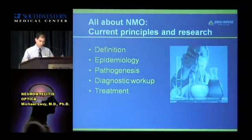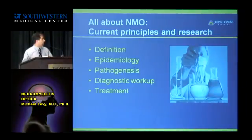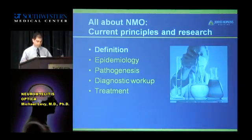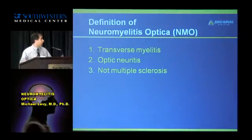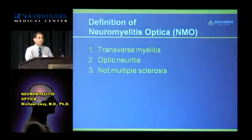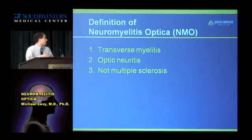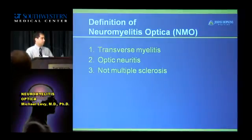I'm going to go through five different subjects within NMO: definition, epidemiology, pathogenesis, workup, and treatment. We'll start with definition. My definition of NMO is really simple: you have to have transverse myelitis, you have to have optic neuritis, and you can't have MS. That's a simplified way to think about NMO, but it gets more complicated when you have to rule out MS.